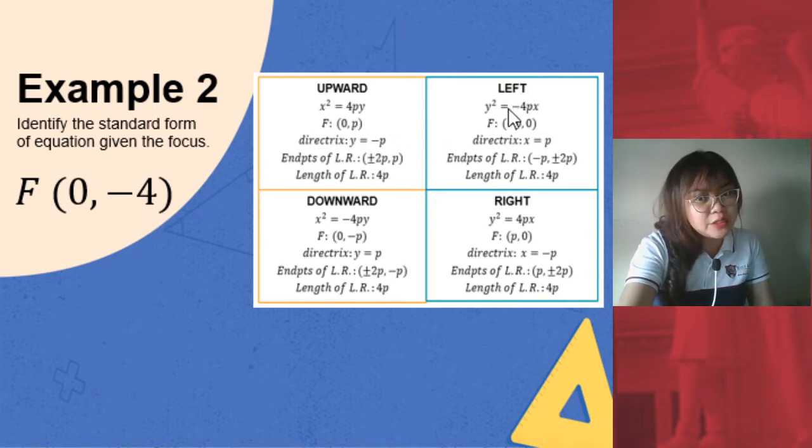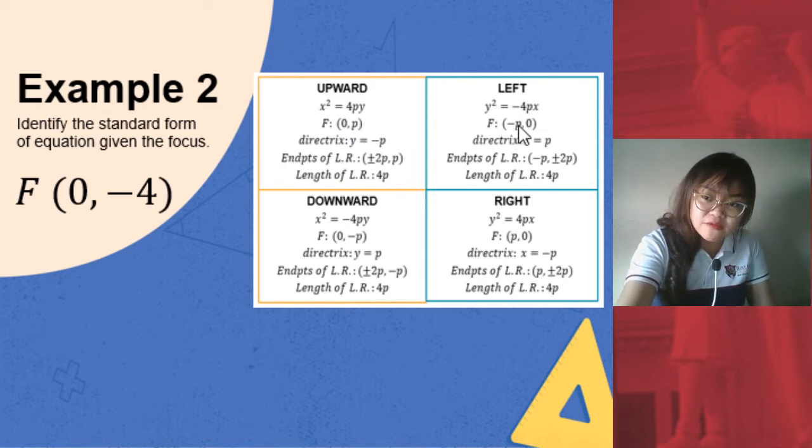For a parabola opening to the left, it has a negative p-value, yes, but it is found on the x-coordinate. This one is on the y-coordinate. So what case would this be? Very good observation! This is a parabola opening downward. It has 0 as our x-coordinate and a negative p-value here.